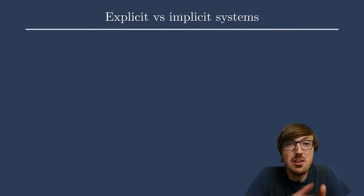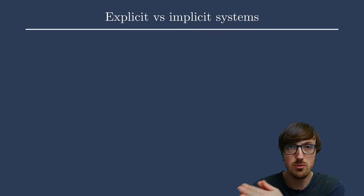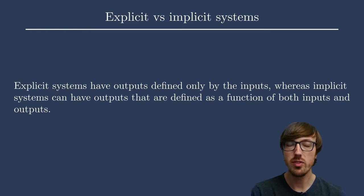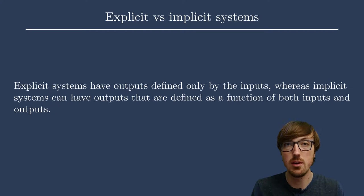But what we're talking about today is not about any of that. It's about explicit and implicit systems. Put into words, an explicit system is any one where the outputs are defined only by the inputs. However, an implicit system is one where the outputs are a function of both the inputs and the outputs. It depends on itself. We'll get more into what that means and I'll show some examples.